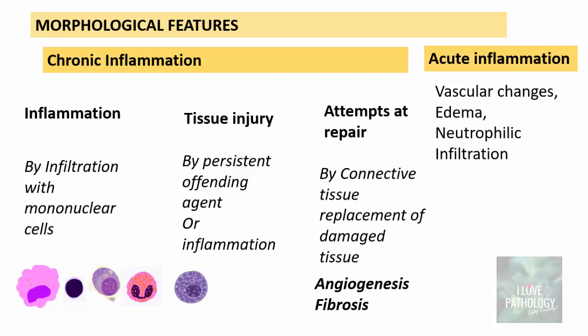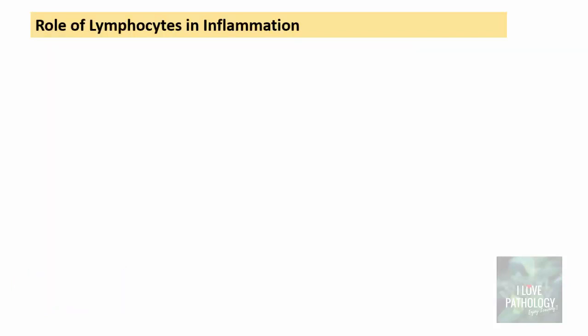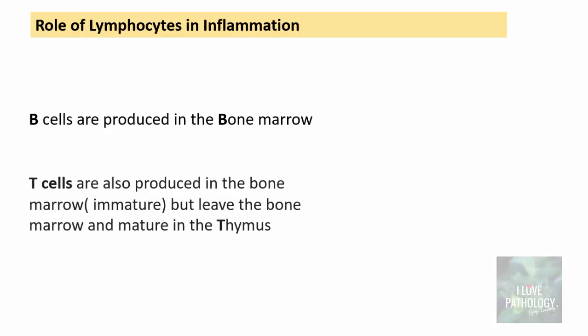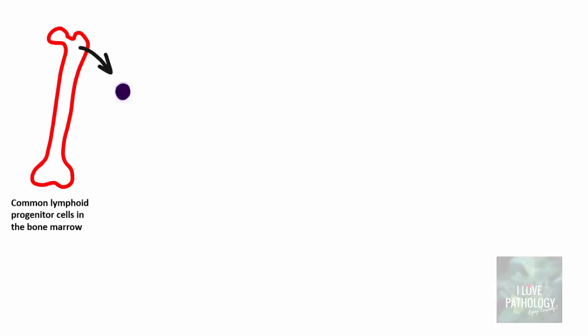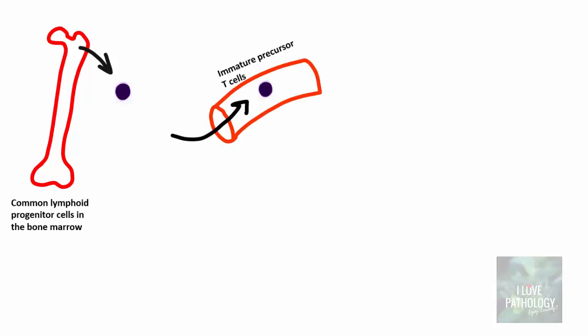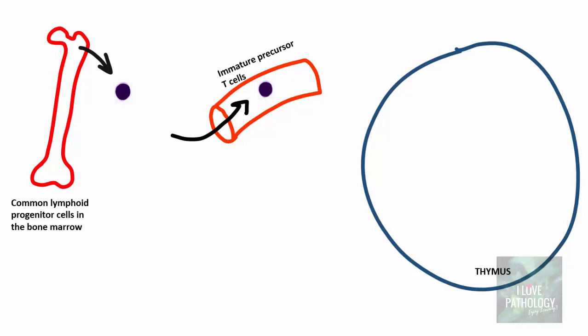In any chronic inflammatory process you can find these three things. Now let us understand the role of various cells — we will concentrate on the role of lymphocytes. There are B cells and T cells. B cells are produced in the bone marrow. T cells are also produced in the bone marrow but as immature T cells; they leave the bone marrow and mature in the thymus. The common lymphoid progenitor cells are in the bone marrow. Immature precursor T cells circulate in the peripheral bloodstream and then enter the thymus, where they are referred to as thymocytes.